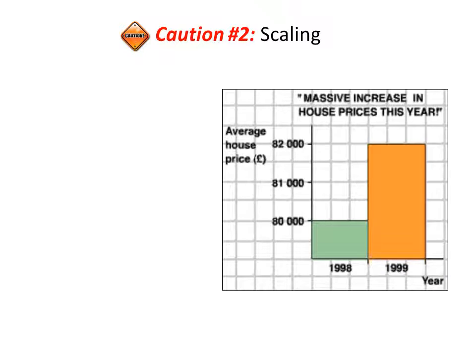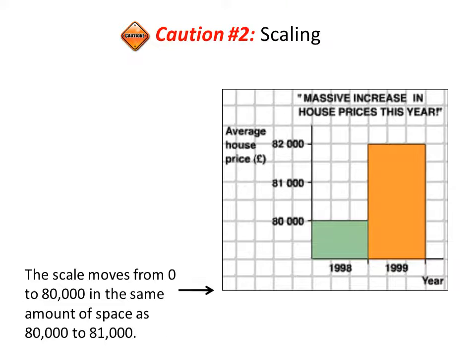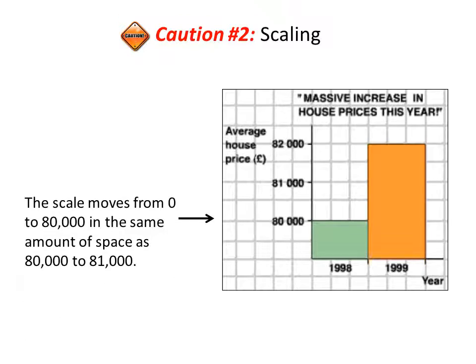The next caution is about scaling. On the same 'massive increase in house prices' graph, the scale moves from zero to eighty thousand in the same amount of space as eighty thousand to eighty-one thousand.